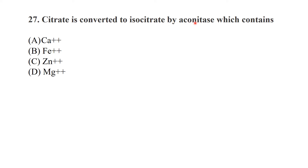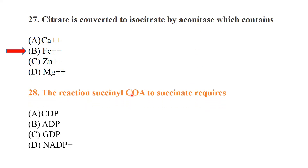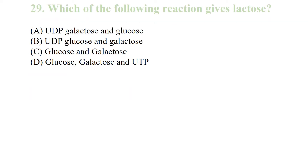Citrate is converted to isocitrate by aconitase, which contains iron. The reaction succinyl-CoA to succinate requires ADP, because during this process ATP is formed by using ADP.